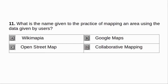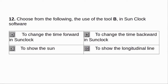What is the name given to the practice of mapping an area using the data given by users? A. Wikimapia. B. Google Maps. C. OpenStreetMap. D. Collaborative Mapping. Answer: D. Collaborative Mapping.